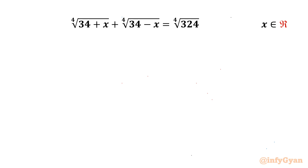Welcome back to Infigyan once again, my dear friends. In this video we have one very interesting question from radical equations. It is the 4th root of (34 plus x) plus the 4th root of (34 minus x) equal to the 4th root of 324, and we are going to calculate the real solutions.